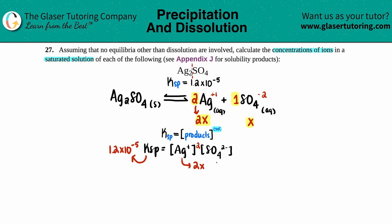So Ag is going to be 2x, and the SO₄ is going to be x. So now let's see: I have 1.2 times 10 to the negative fifth equals—I have 2x, that's squared, times by x. Let's work with the 2x squared first. Remember, 2x squared is just timesing two of the same thing, so 2 times 2 is 4, x times x is x squared.